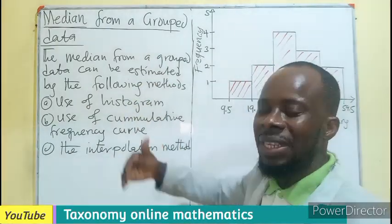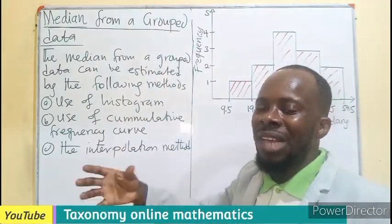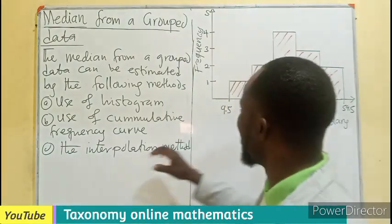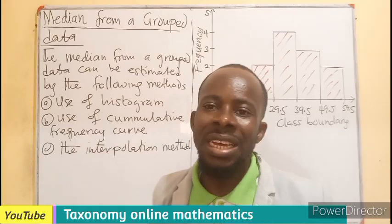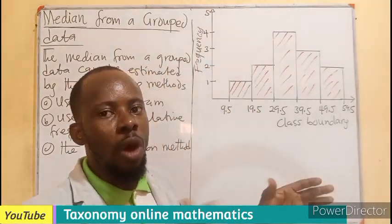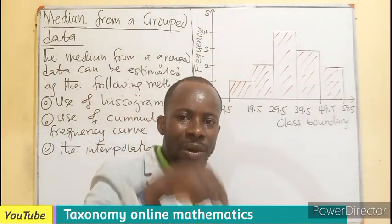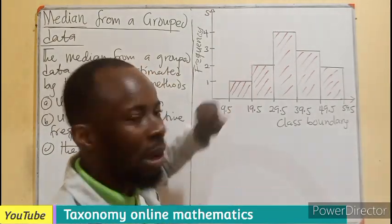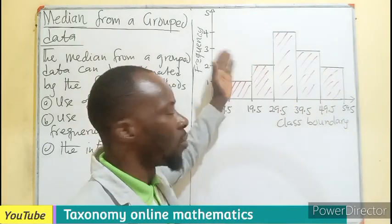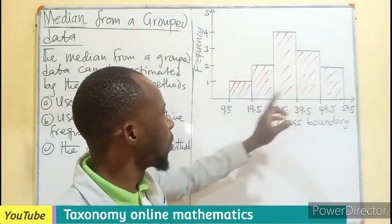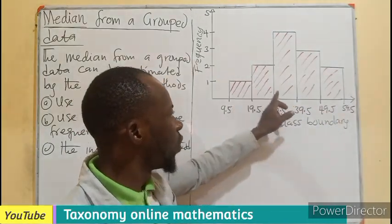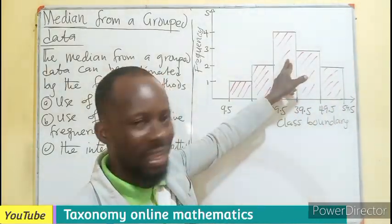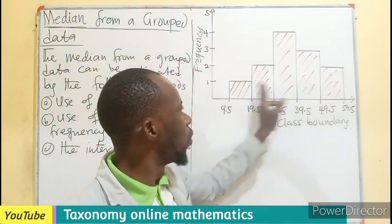When you are asked to estimate the median and the data is given to you, whereby you are drawing a histogram, you can find the median from the histogram by dividing it into two equal parts. The number at the middle of your data becomes the median. As an example, this is a histogram being drawn from a set of values or data. We have one, two, three, four, five bars. So we can see that the middle is going to be on this. So one, two, one, two, the middle.